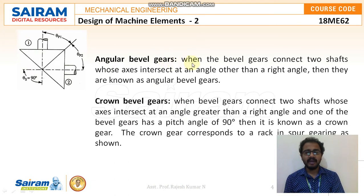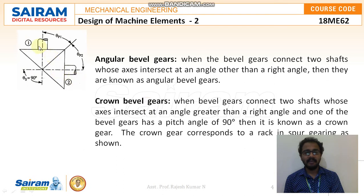There is no restriction on the angle limit for angular bevel gears — any angle apart from 90° falls under this category. Moving to the third type: crown bevel gears. When bevel gears connect two shafts whose axes intersect at an angle greater than a right angle, and one of the bevel gears has a pitch angle of 90°, then it is known as a crown gear. So the angle between the shafts must be greater than 90°, and one bevel gear must have a pitch angle of 90°. This crown gear corresponds to a rack in spur gearing.